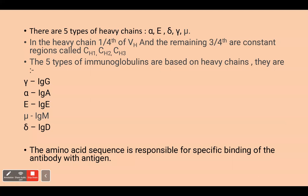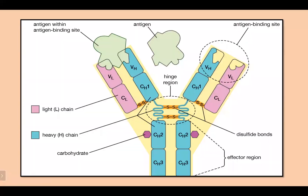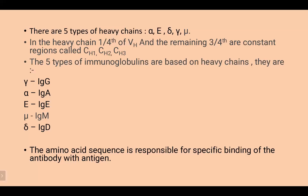There are five types of heavy chains: alpha, delta, gamma, mu, and epsilon. In the heavy chain, one fourth is the variable heavy region and the remaining three fourths are the constant regions: constant heavy 1, constant heavy 2, and constant heavy 3. The light chain has two parts: variable and constant.